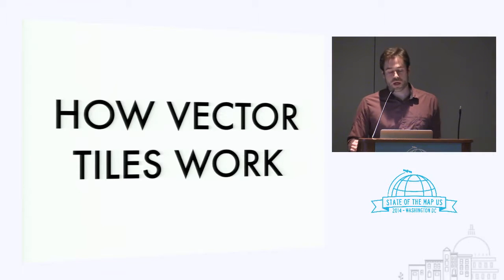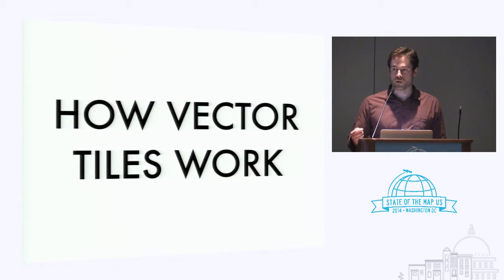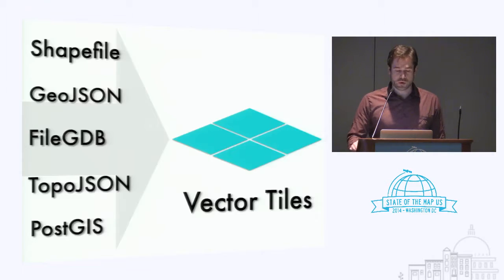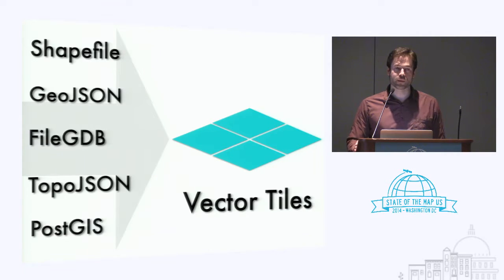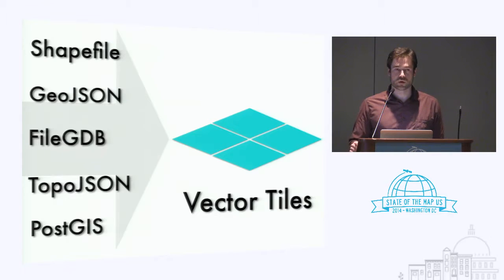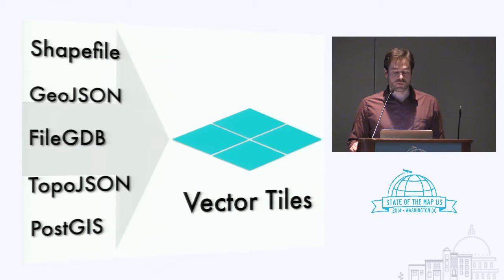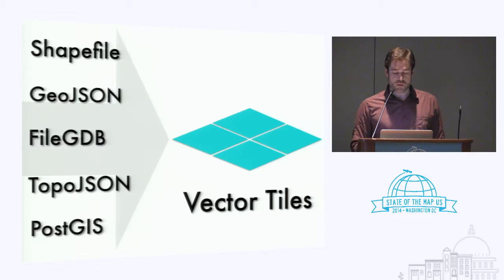Vector tiles are somewhat complicated. There's new vocabulary we need to know to talk about them so we can dive into harder concepts like what's actually inside them. It should be easy to create vector tiles from any common geodata source. We've been focusing on optimizing shapefiles, GeoJSON, and PostGIS in TileMill, and we're now adding support for FileGDB — the ESRI file database format — and TopoJSON. But anything can be rendered into vector tiles.